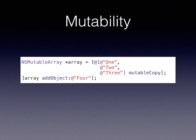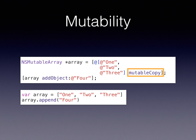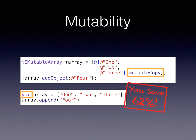About mutability: in Objective-C you'd create a mutable array and add an element using mutableCopy. In Swift, you just create an array using var instead of let, which makes it mutable, and then simply append something to it. That's way simpler and way more beautiful. The var keyword is the key here, and it saves you 62% of your keystrokes.